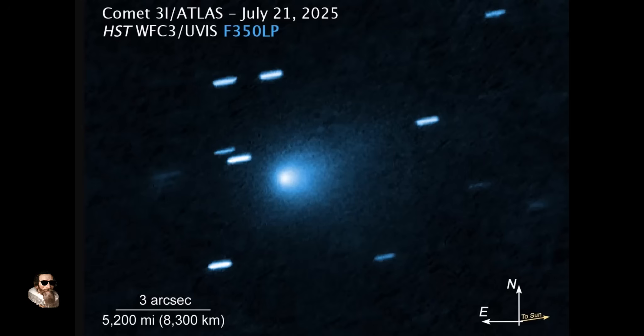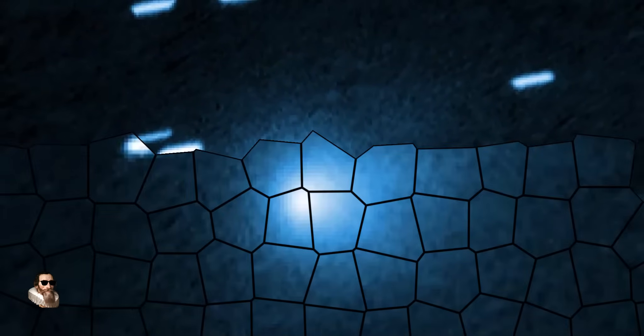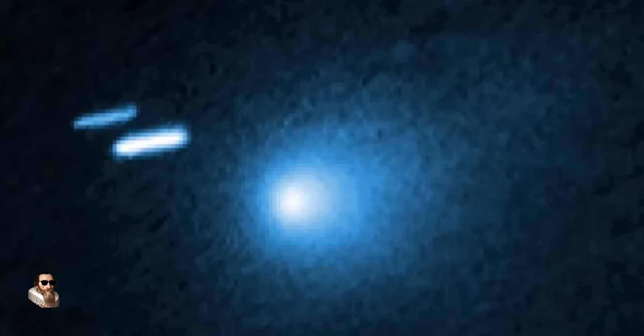This image was obtained by the Hubble Space Telescope on July 21st, 2025, and this is the best image that we have so far of the interstellar object 3i Atlas.